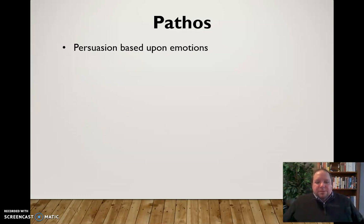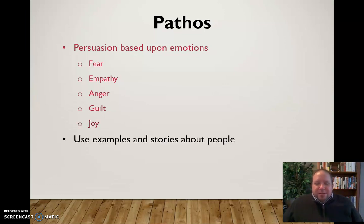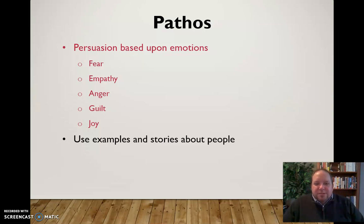With pathos, we're talking about emotional appeal — persuasion based on emotion. It could be a variety of emotions: fear, empathy, anger, guilt, joy. We really want to tug at the audience's heartstrings. To do that, we use examples and stories about people. We want to put a face on the topic — we don't just want to rely on facts and statistics. People aren't necessarily persuaded by numbers; they want to know that this affects real people in the real world.